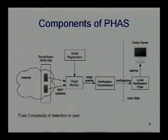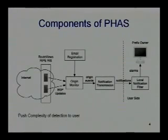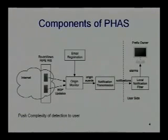The philosophy is it's not really our problem to know whether it's a false origin or not. We send it to the prefix owner and let them deal with it. The main components of the PHAS system include the origin monitor, which looks at RouteViews and RIPE updates and decides how the origin set changes. From email registration, we see who is registered to receive notifications. We use email delivery to send notifications, and we allow a filter block at the prefix side to filter out alarms that are not really important to you.